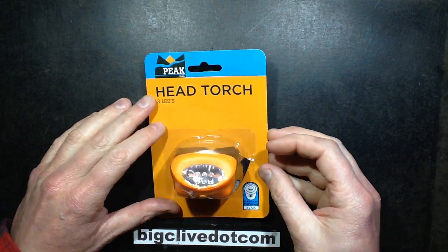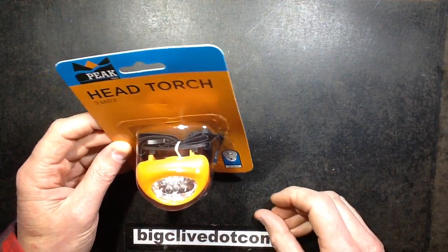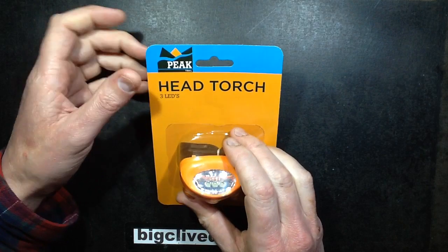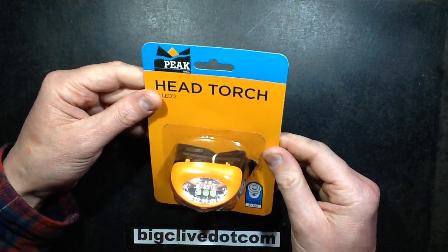Every year Poundland seems to bring out a new LED head torch in this sort of Tica style. And this year the theme seems to be orange amongst various of their camping products. So I've got one to check out.